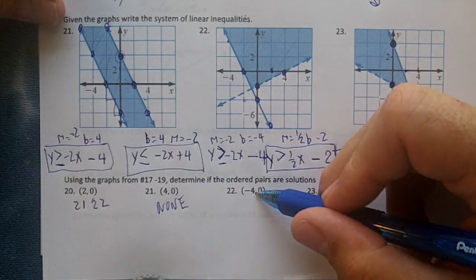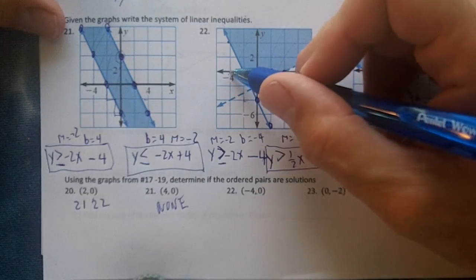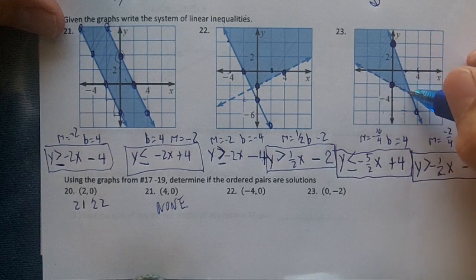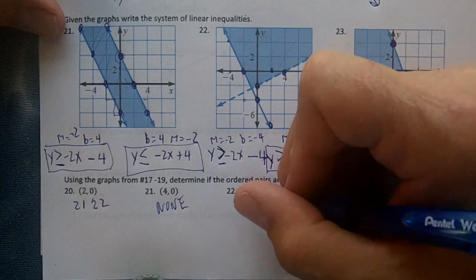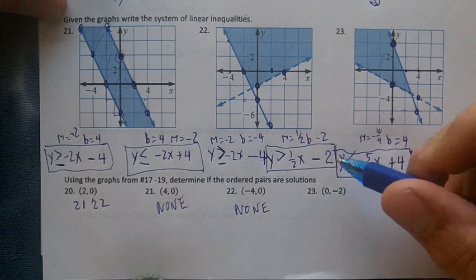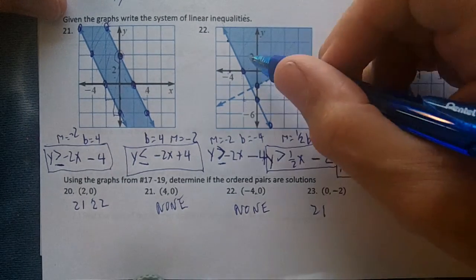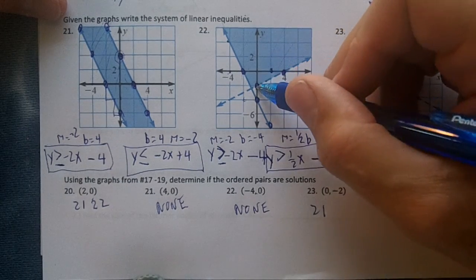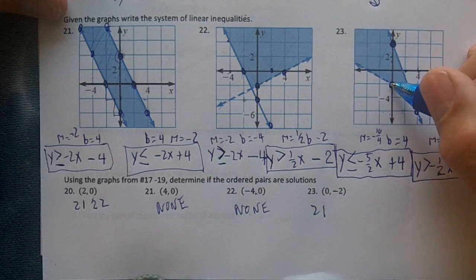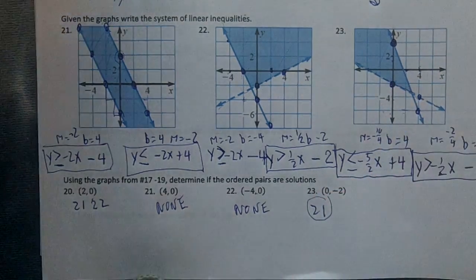Let's do negative 4, 0. Point (-4, 0) is right here — it won't work in 21. For 22, (-4, 0) won't work. For 23, (-4, 0) is on a dashed line — it doesn't work in any of them. Lastly, (0, -2): it works in problem 21. For 22, (0, -2) is on a dashed line — it won't work. For 23, (0, -2) is on a dashed line — it won't work. So just 21 on that one.